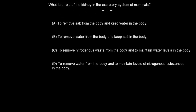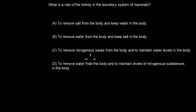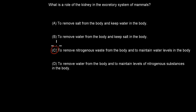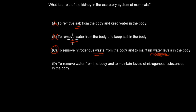Next: What is the role of the kidney in the excretory system of mammals? A: Remove salts and keep water. B: Remove water and keep salt. C: Remove nitrogenous waste and maintain water levels. D: Remove water and maintain nitrogenous substances. The correct answer is C — the kidney removes nitrogenous waste and maintains water levels through osmoregulation. Options A and B are incorrect because the kidney's primary purpose is not simply to remove salt or water but to regulate balance.